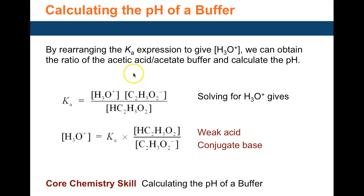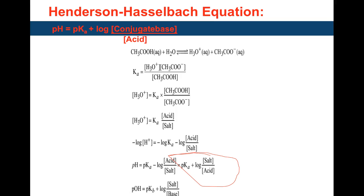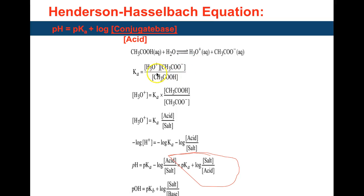Continuing where we left off calculating the pH of a buffer. Looking at the Ka expression of acetic acid: it ionizes in water forming H3O+ and the acetate ion. This can be written as CH3CO2H forming H3O+ and CH3CO2⁻. The Ka expression is products over reactants — H3O+ concentration times the conjugate base divided by the acid concentration.